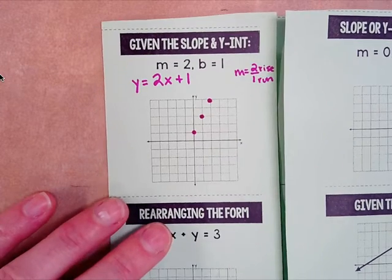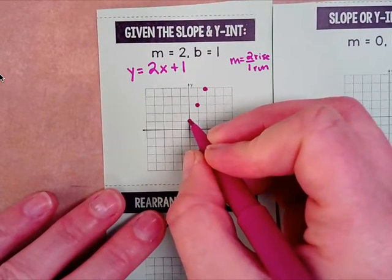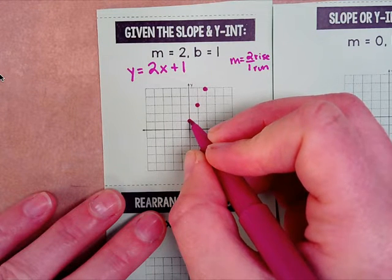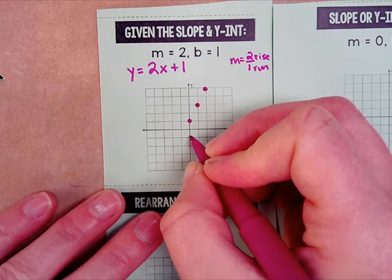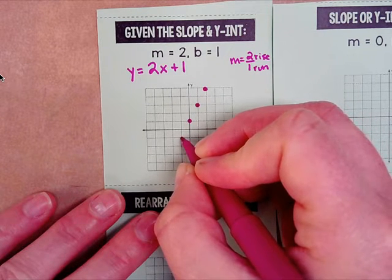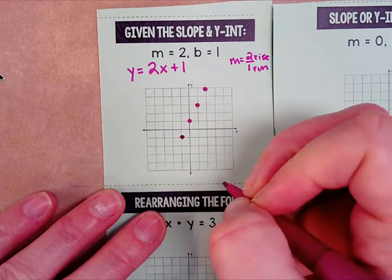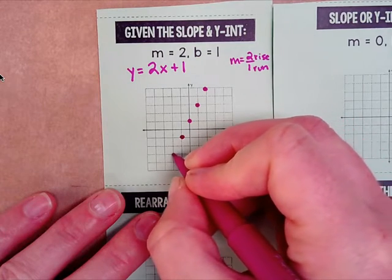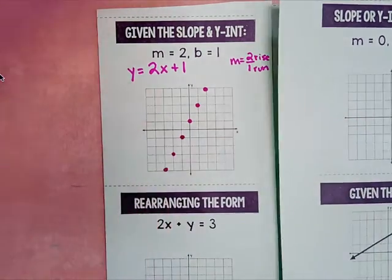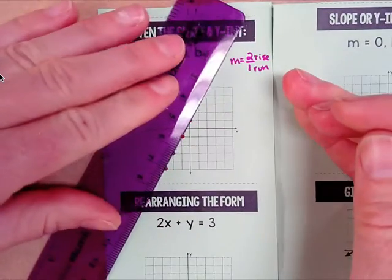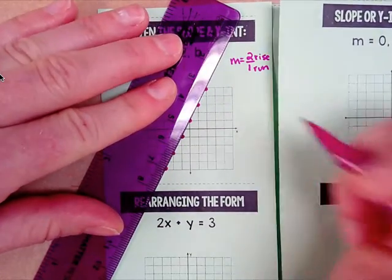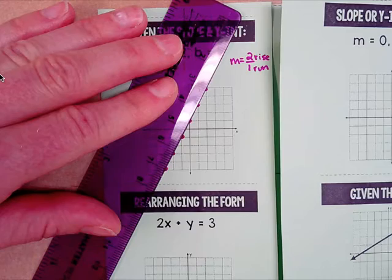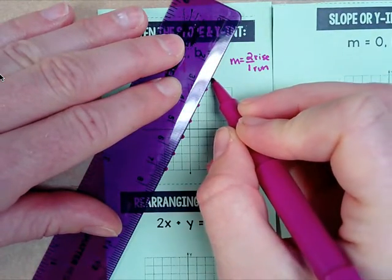I want to get points all the way throughout my whole graph so it'll be easy to make a line. Go back to the y-intercept and do the opposite — instead of rising 2, go down 2; instead of going right, go left. Do it again: down 2 over 1, down 2 over 1. Then use your ruler, line it up with all of the dots right through the middle of each dot, and hold it down really good.